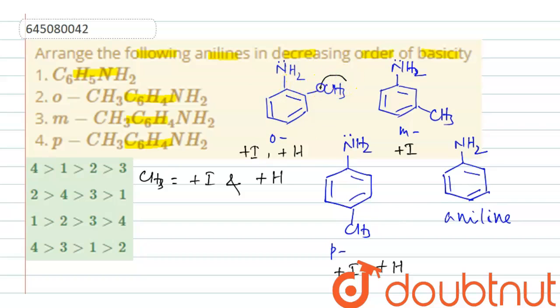But the problem is, methyl group is here, ortho to amino group. As a result, steric hindrance will take place, that is known as ortho effect. Ortho effect. Here, why? Due to the presence of methyl group ortho, there will be steric hindrance for the approach of the proton. As a result, it becomes least basic.